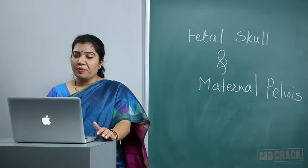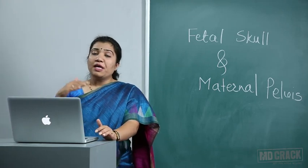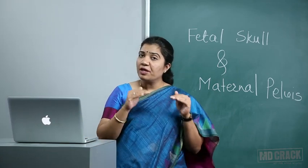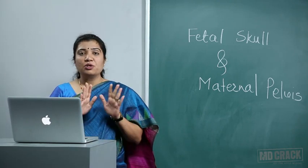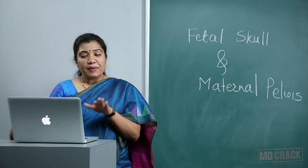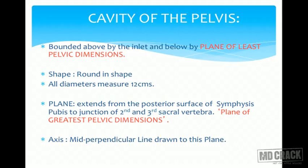The cavity of the pelvis is bounded above by the inlet and below by the plane of least pelvic dimensions. The shape of the cavity is round with all diameters measuring 12 cm each. The plane of greatest pelvic dimension extends from the posterior surface of symphysis pubis to the junction of second and third sacral vertebra. Its axis is a mid-perpendicular line drawn to this plane.